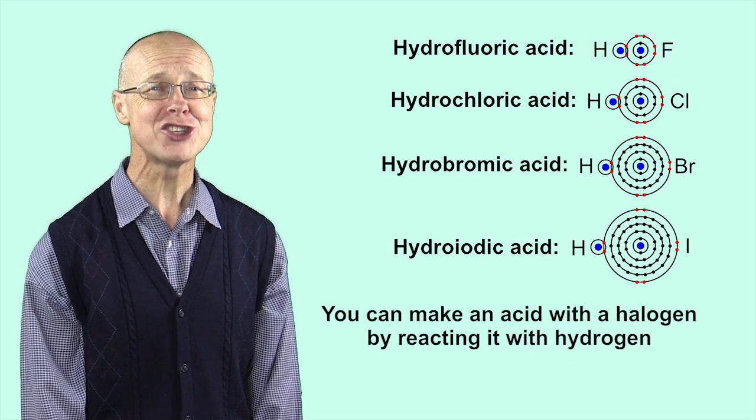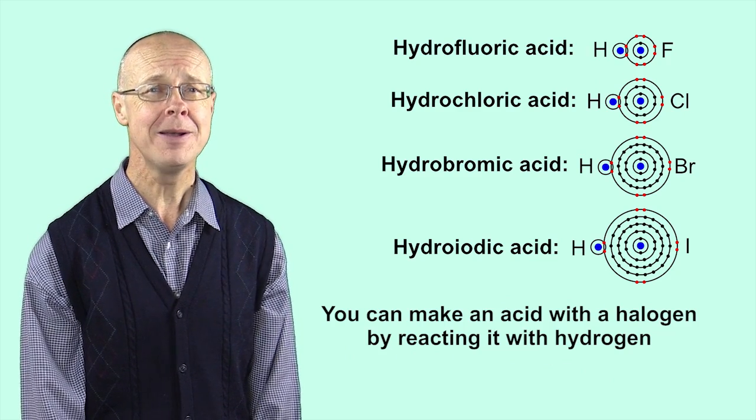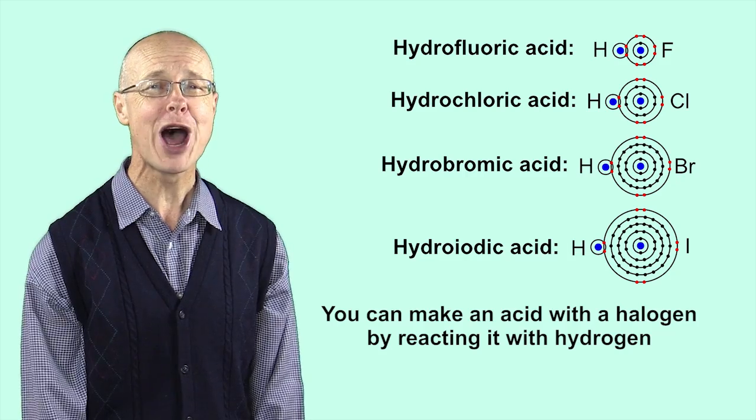You can make an acid with a halogen by reacting it with hydrogen.